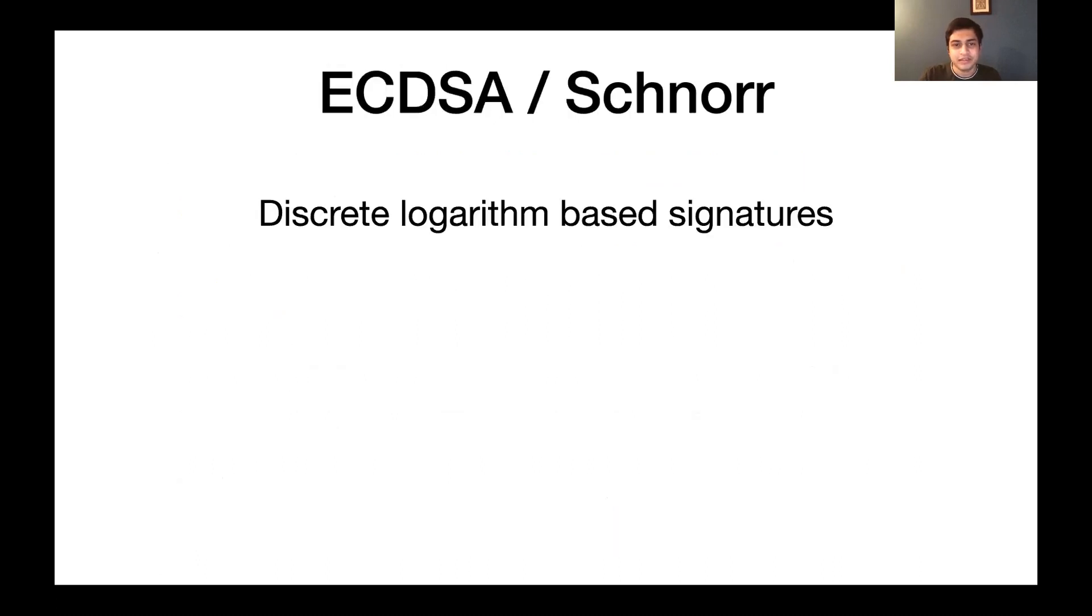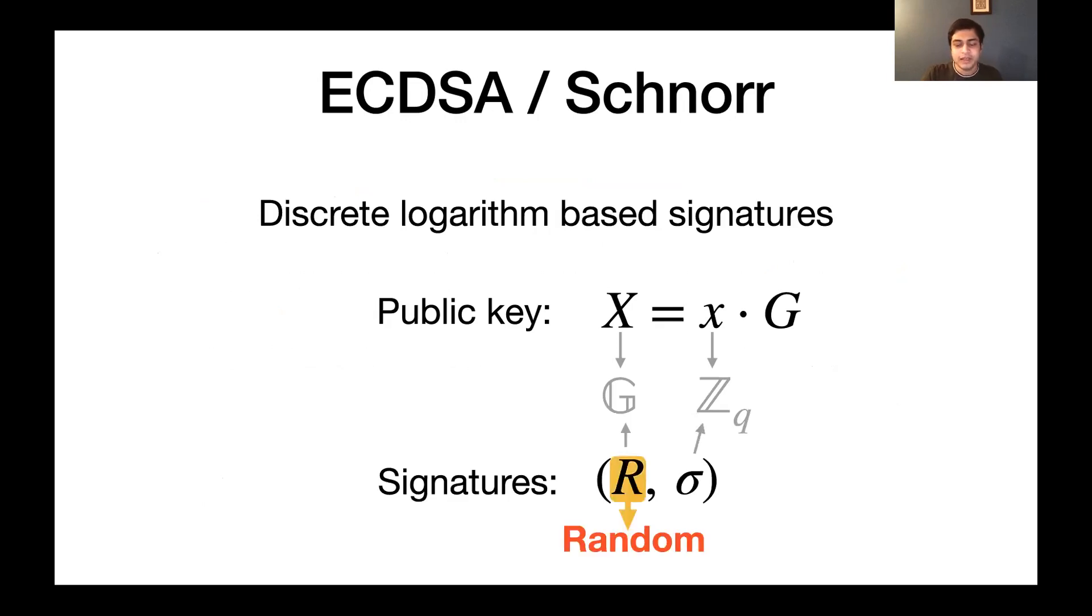So a quick recap of ECDSA and Schnorr signatures. They're both based on the hardness of the discrete logarithm problem. And the public keys comprise a group element X, which is a point on the curve, and a scalar, the discrete log of which is lowercase x, which is a scalar in Z_q. And signatures are of the form r comma sigma, where again, r is a curve point and sigma is some scalar. The important thing is that r is a random nonce.